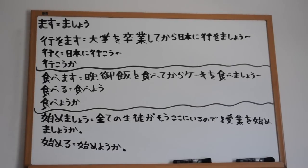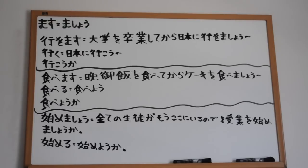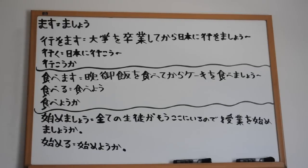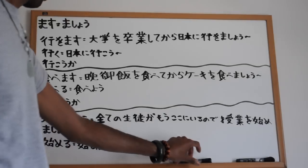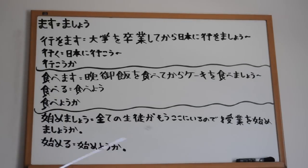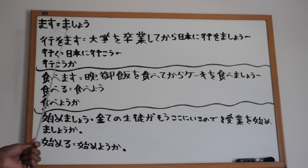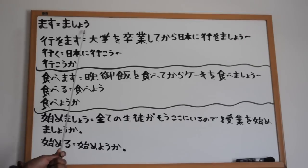So again, we're talking about mashou. It's very simple. When you have a verb in the masu form - tabemasu, ikimasu, yomimasu, kikimasu - all those verbs in the masu form, all you're going to do is turn the masu into mashou. You see how I did it here? Masu becomes mashou.